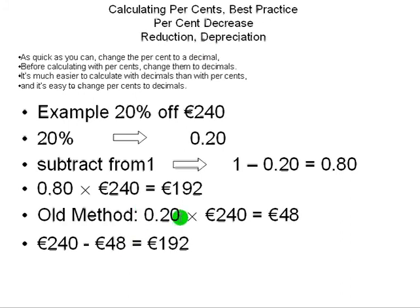The old method would have first found out how much the reduction was, which is 20% of 240, which turned out to be 48 euros, then subtract the reduction from the original price to get 192. But what I've done is I've done the subtraction first. For later problems, there's going to be a good reason we're doing it this way.